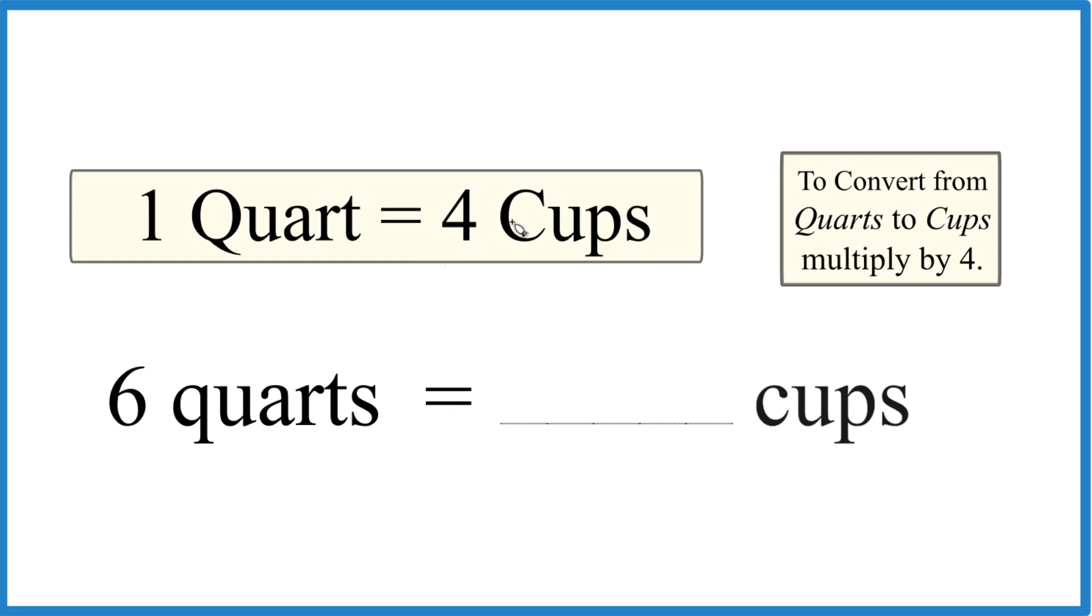So if one quart is four cups, six quarts is going to be six times four, 24 cups. That's one way to figure it out.